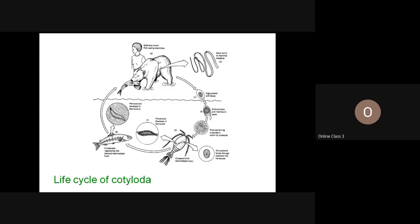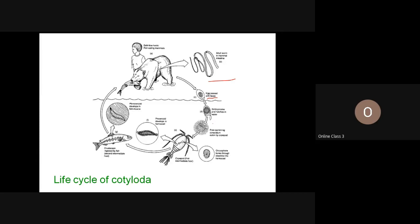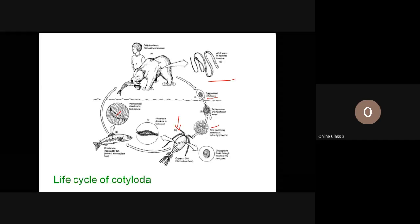In the definitive hosts — humans, bears, wild felines, canines — the adult parasite resides in the intestine and lays operculated eggs. When eggs reach water, they develop into coracidium, which is ingested by cyclops to form procercoid. If cyclops is ingested by fish, plerocercoid develops. When the second intermediate host is eaten by the definitive host, the cycle completes.